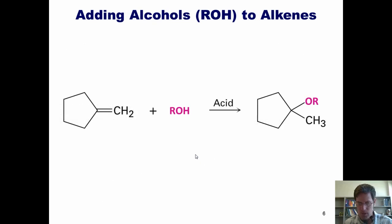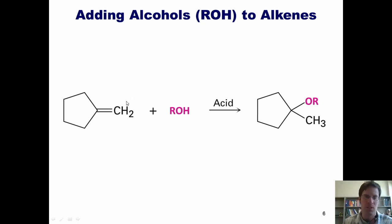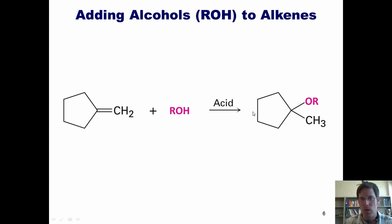Adding alcohols to alkenes is almost identical to adding water. Electrons come out of the alkene, grab a proton, and it gets placed on the less substituted carbon to give the more stable carbocation internally. The oxygen lone pair of electrons comes in to form a bond there. Deprotonation ultimately results in this product, which is called an ether.